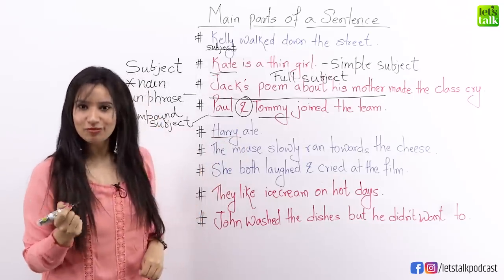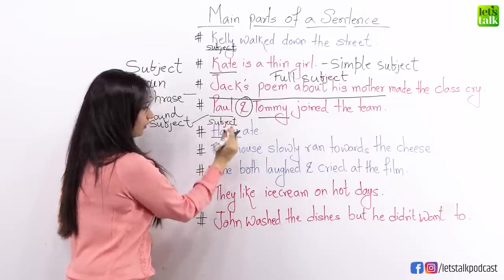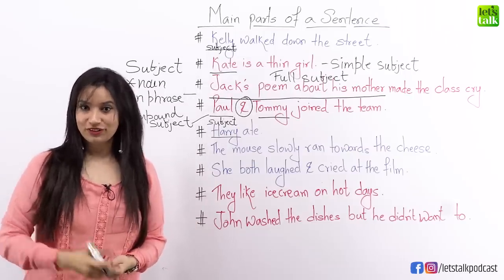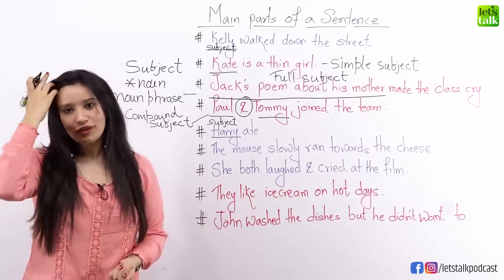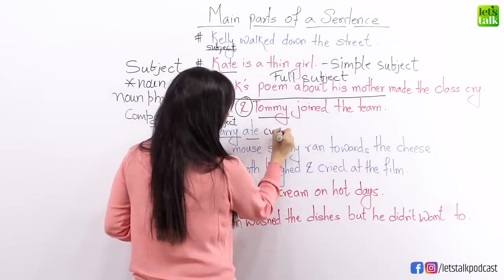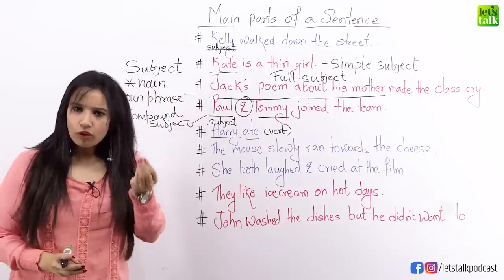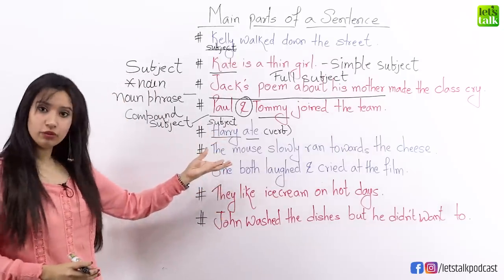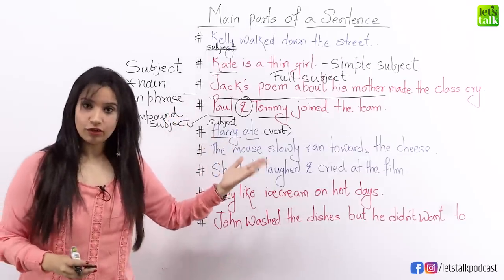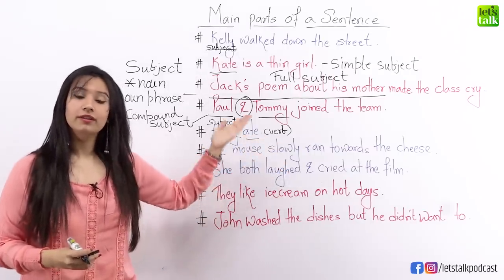Harry is the noun, so Harry is the subject. What are we left with? What is 'ate'? Ate is the past form of the word 'eat.' What is eating? It's an action, so it's a verb. Ate is a verb. What do we call that part of a sentence which tells us what the noun is doing? What did Harry do? Harry ate. So 'ate' is the verb, which is called the predicate.